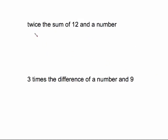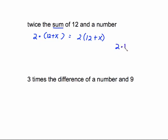'Twice the sum of 12 and a number' — two times the sum. When you see the word 'sum,' put parentheses, put a plus inside, then fill in 12 and x. We don't need the dot, so it's two times (12 + x). The reason you need parentheses is that without them you'd only have two times 12 plus x, meaning you're only doubling the 12, not doing twice the whole sum.